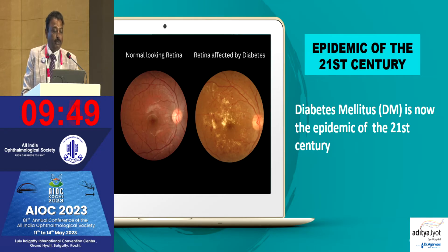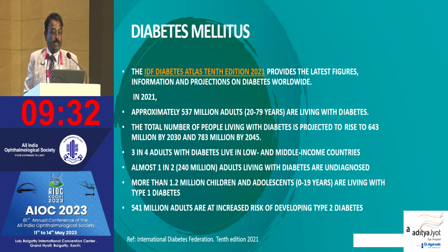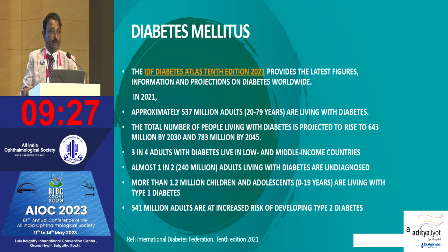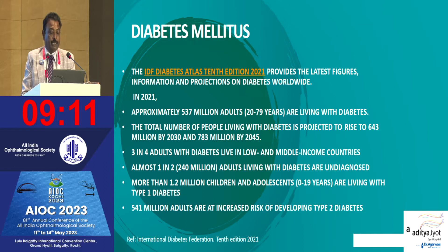Here you see a normal-looking retina and a retina affected by diabetes. Diabetes mellitus is now the epidemic of the 21st century, and diabetic retinopathy is a major cause of blindness in the working middle-age adult population and the fifth cause of blindness globally. The IDF Atlas 10th edition from 2021 shows approximately 537 million adults aged 20 to 79 are living with diabetes, projected to rise to 643 million by 2030 and 783 million by 2045.